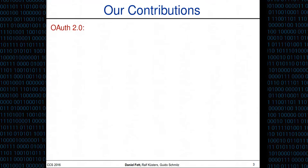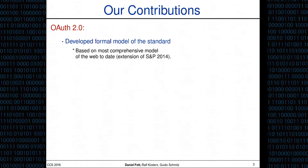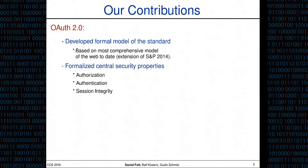So what did we do? We took OAuth and created a formal model of the OAuth standard, which is based on a generic model of the web — the most comprehensive model of the web infrastructure to date, presented at Security and Privacy 2014. We then went on to formalize central security properties of OAuth, namely authorization, authentication, and session integrity, and then tried to prove these properties.